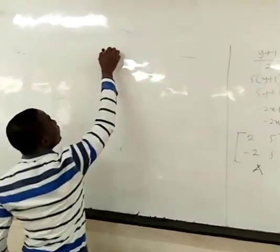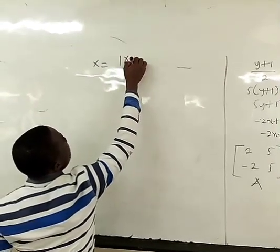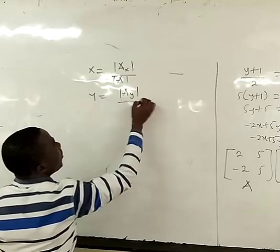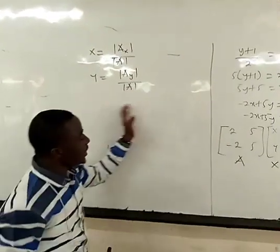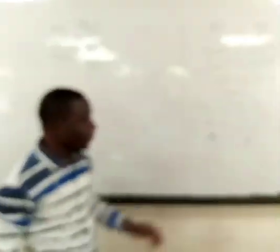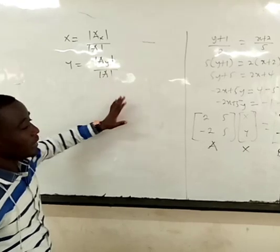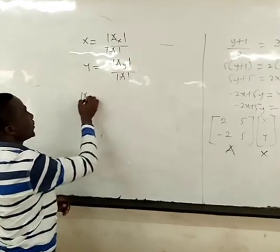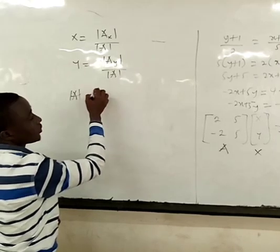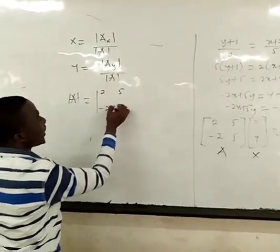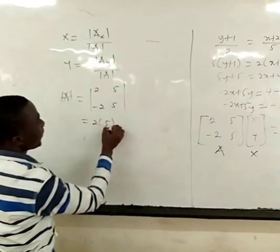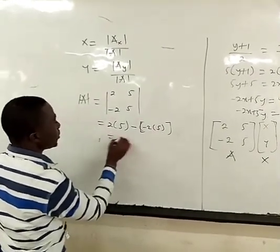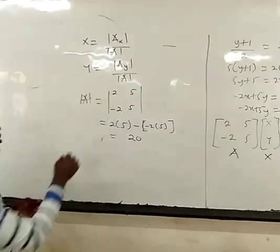Cramer's Rule says that if you want to find x, you find the determinant of Ax over the determinant of A, and if you want to find y, it is the determinant of Ay over the determinant of A. So the first thing is to find the determinant of A, which equals [2, 5; -2, 5]. You get 2 times 5 minus negative 2 times 5, which gives you 10 plus 10, so the determinant of A is 20.